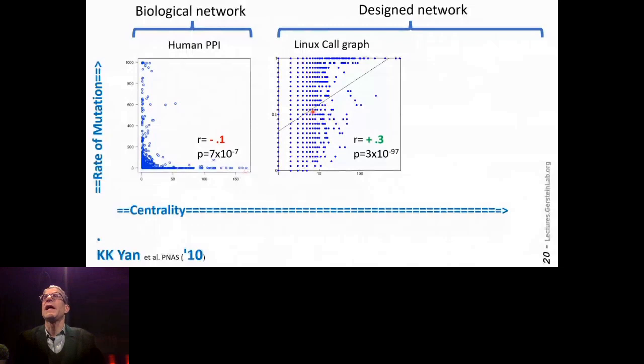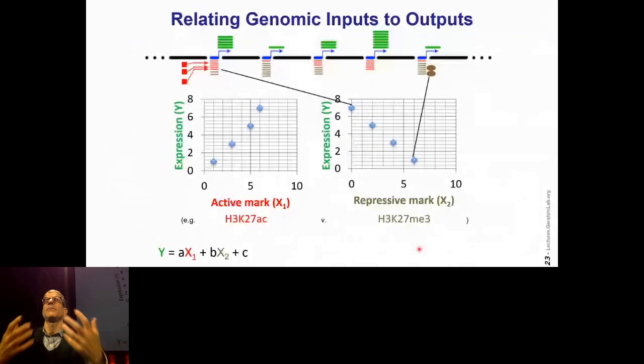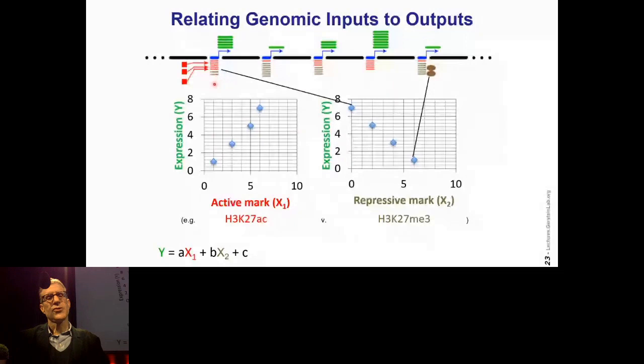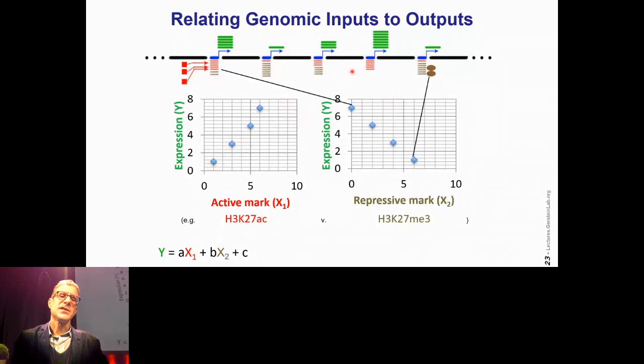That was our segue into genomics. We started also thinking about modeling the genome in the early days, relating what's happening at the genes to looking at the amount of a particular histone mark or a particular transcription factor — some were positively correlated, some negatively correlated. We tried making up simple linear models, but linear models didn't work so well.